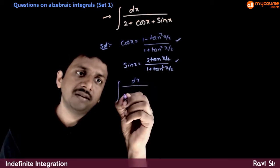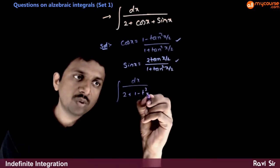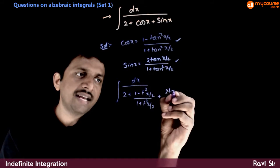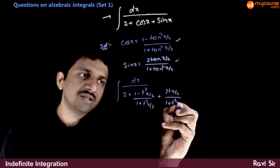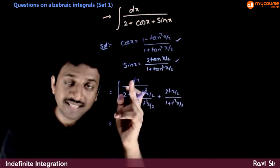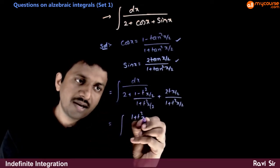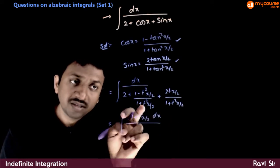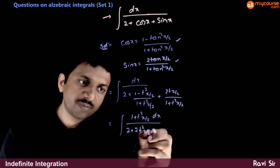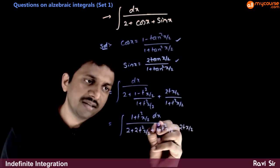We write dx / (2 + cos x) where cos x = (1 − tan²(x/2)) / (1 + tan²(x/2)), plus sin x = (2 tan(x/2)) / (1 + tan²(x/2)). Taking the LCM, (1 + tan²(x/2)) goes to the top, giving (1 + tan²(x/2)) dx divided by 2(1 + tan²(x/2)) + (1 − tan²(x/2)) + 2 tan(x/2).